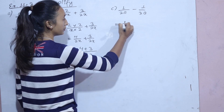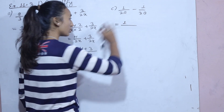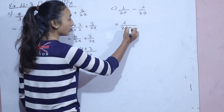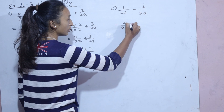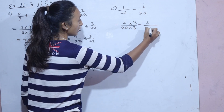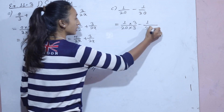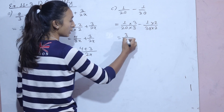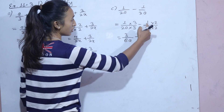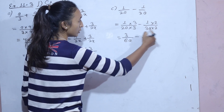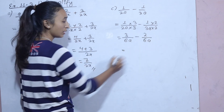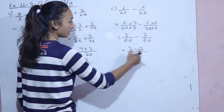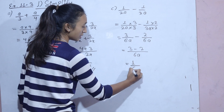For 2a and 3a with different denominators, we need to multiply. Multiply by 3 and by 2 to get common denominator 6A. So we have 3 times 2 = 6A. The result is 6A with 3 minus 2, giving 1 by 6A.